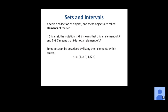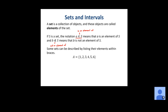Now sets and intervals. A set is a collection of objects, and the objects in that set are called elements. If S is a set, the symbol '∈' means 'is an element of S,' and the crossed-out version means 'is not an element of S.' Some sets can be described by listing elements in braces — for example, A = {1, 2, 3, 4, 5, 6}. For larger sets like all real numbers or all integers, we can't list every element, so we need other ways to describe them.